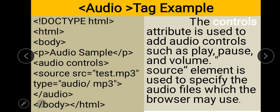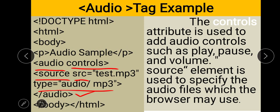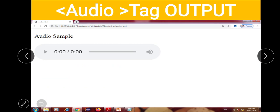Here they give one example related to the audio tag. An audio tag is added with opening and closing tags, a controls attribute, and inside it a source tag with src and type attributes. The controls attribute adds play, pause, and volume buttons. The source element is used to specify the audio file which the browser will use.